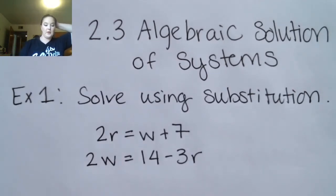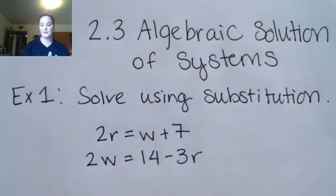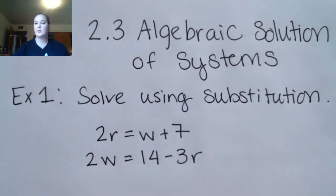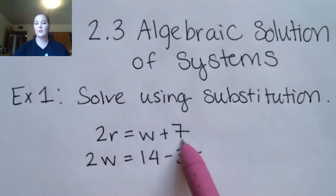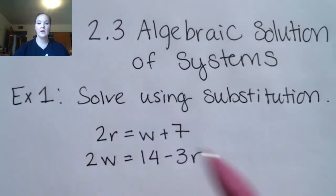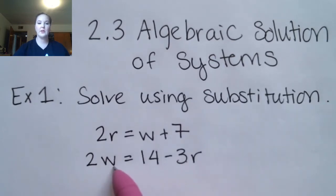When you are solving algebraically using substitution, you're going to isolate one of the variables in one of the equations. So we could either divide this equation by 2 to isolate R, or we can divide this equation by 2 to isolate W.